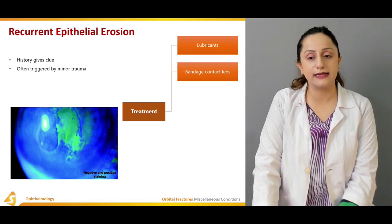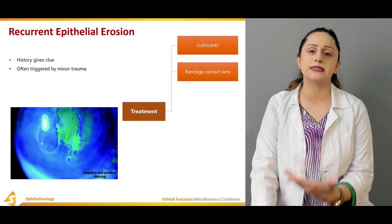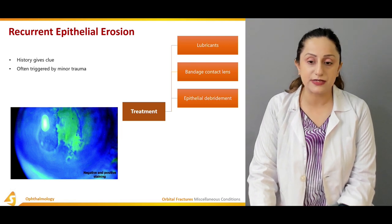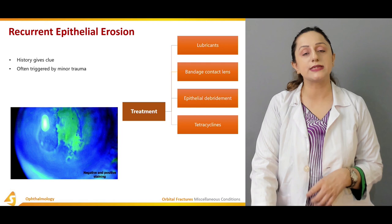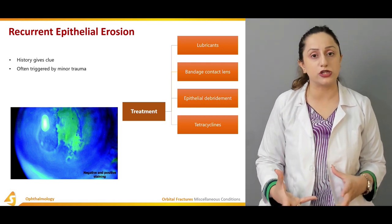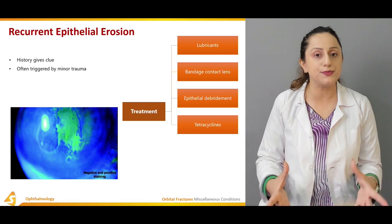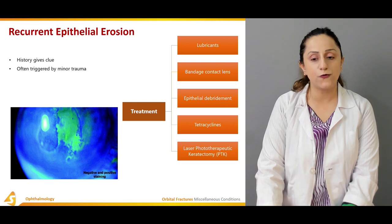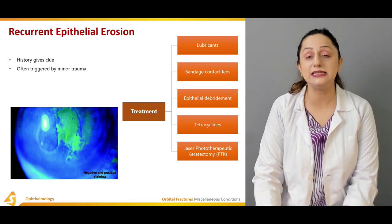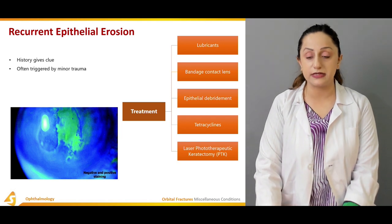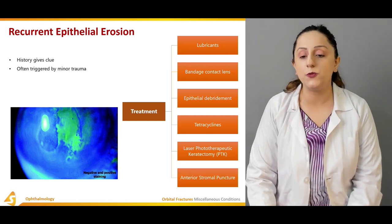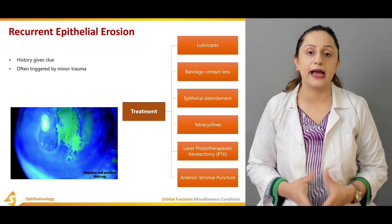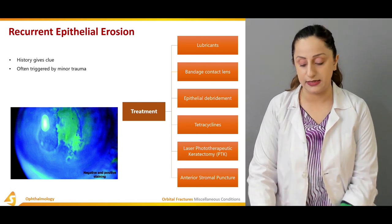Bandage contact lenses and rest are important since this can be a very painful condition. Epithelial debridement is also important, along with prophylactic antibiotics such as topical or systemic tetracyclines. Laser phototherapeutic keratectomy (PTK) is sometimes performed in recurrent epithelial erosion cases, and anterior stromal puncture is another treatment option.